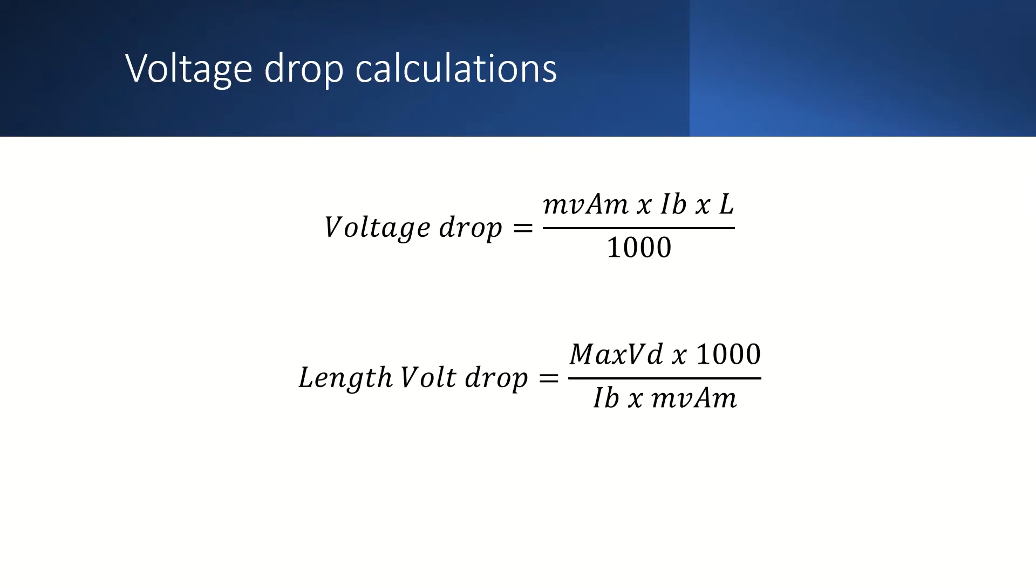So if we take the maximum volt drop for the final circuit either 6.9 volts or 11.5 volts for a single phase circuit and multiply by 1000.